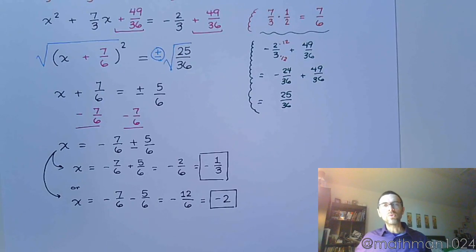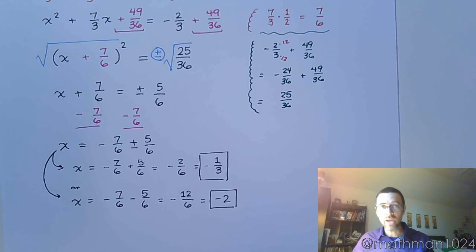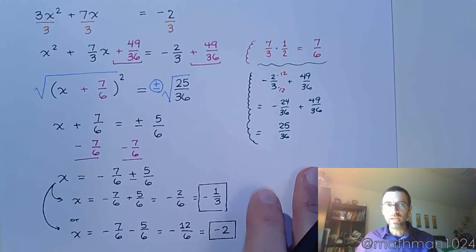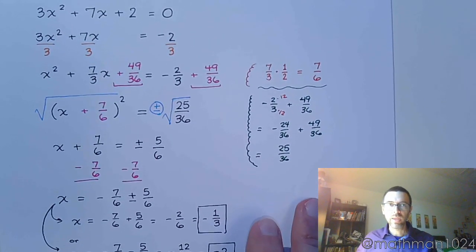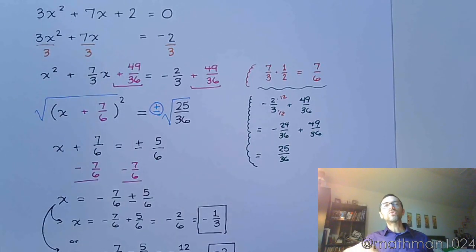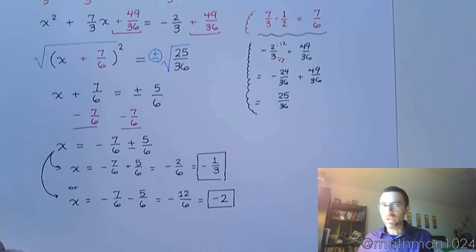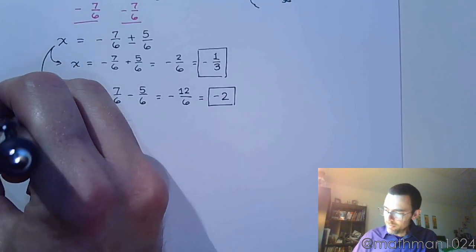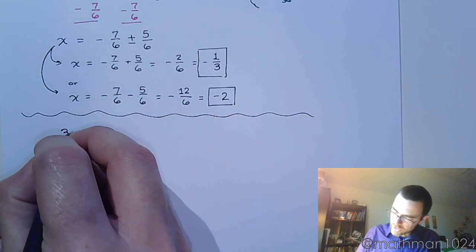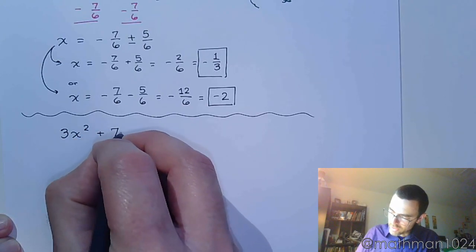When you look at these two solutions, although one is a fraction, they are both very nice rational numbers. Since both solutions are rational, that means at the very beginning of this problem I could have solved this equation by factoring. This is why I stress how important factoring is — it can save us a lot of time. Let me go back to the original problem and show how easy it could have been.